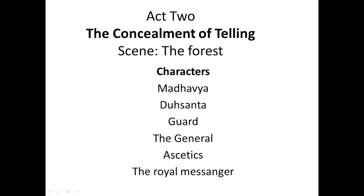The scene is the forest where the hermitage of Kanva is located. The main characters involved in this act are Madhya, the Jester of the King; Dushanta, the King himself; the guard; the general; two ascetics; and the royal messenger.